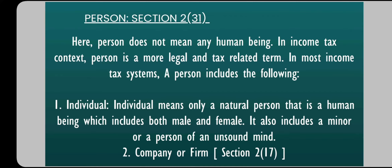Individual also includes a minor, and a person of unsound mind. But when assessment happens in such a case — if the individual is a minor or of unsound mind or mentally unstable — then the assessment will be done on the guardian, or on the manager of the person of unsound mind, basically whoever is entitled to receive their income. Individual means only a natural person — a human being — including both male and female, including minors and persons of unsound mind. In case of a minor or person of unsound mind, whosoever is going to be the legal representative will be assessed.